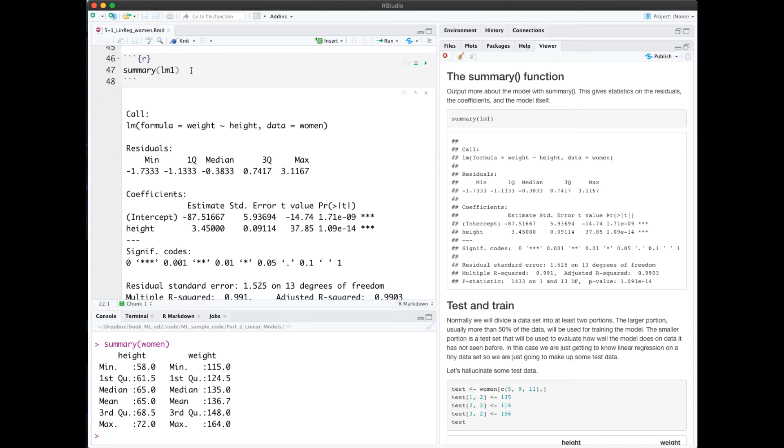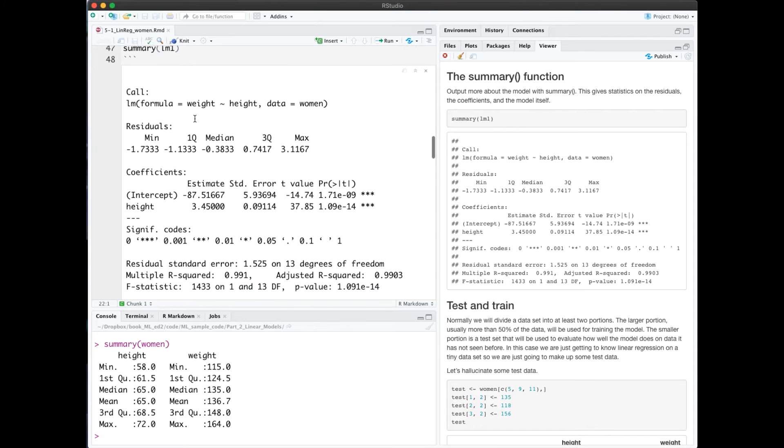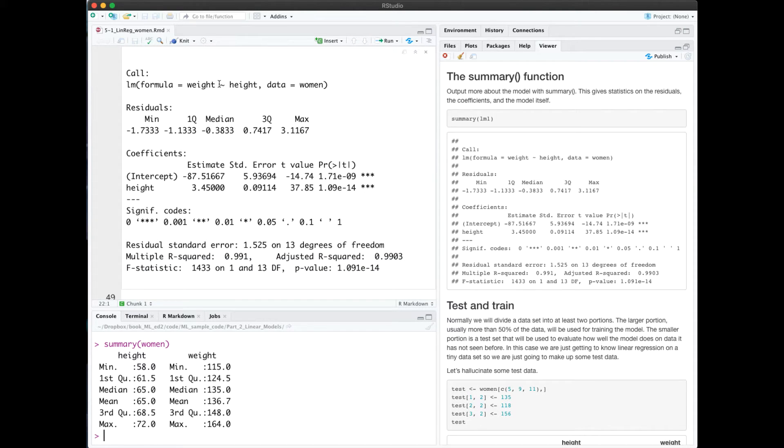As we see here, we ran a summary of our linear model 1. And this is the output that we see. The first thing it does is print the formula, and then it shows the residuals. Residuals are errors, the distance from a point to the regression line.